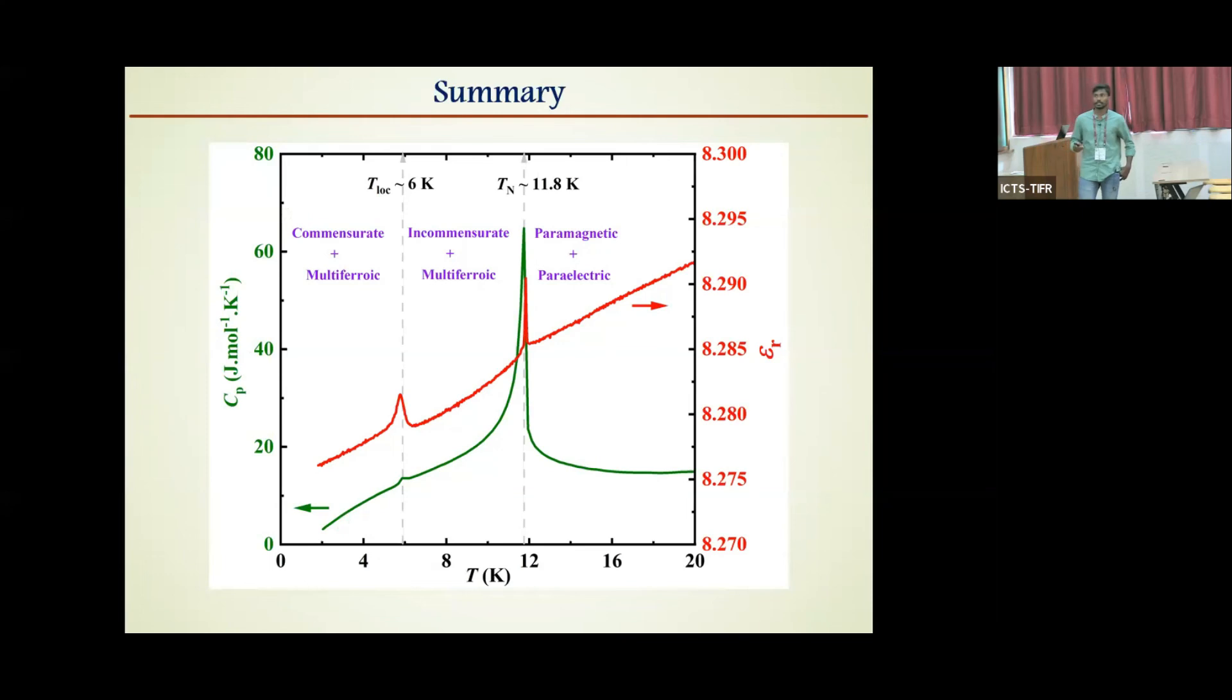In summary, the Gd2BaCuO5 compound exhibits both incommensurate and commensurate magnetic structures at 11.8 Kelvin and 6 Kelvin. And moreover, it exhibits multiferroicity in both phases.